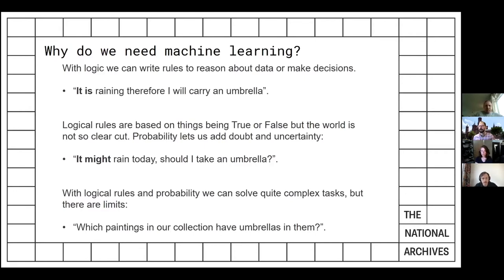Here are some prompts for why we might need machine learning. With the logic part of AI, you can build complex rules to help make decisions — for example, 'it's raining so I'll carry an umbrella.' But the world isn't a binary true-or-false decision. Systems in the 1980s called expert systems built very complex logical rules. You have to add in probability to deal with uncertainty — so I might say 'it might rain today, should I take an umbrella?' — but even probability and rules don't help solve some complex tasks.